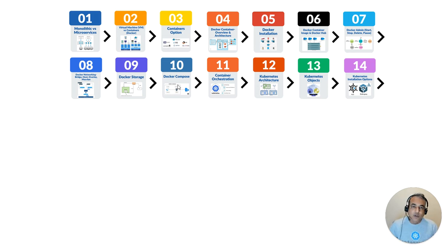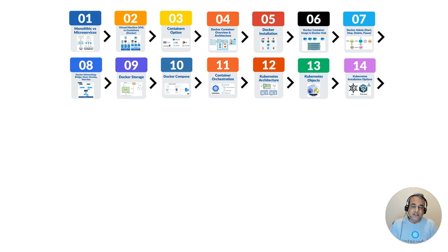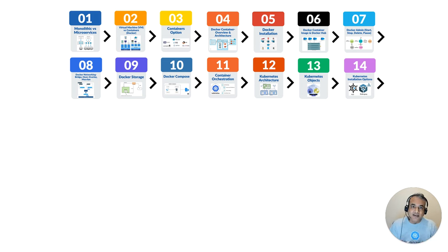Then we'll look at container orchestration tools like Kubernetes, along with alternatives like OpenShift, Amazon ECS, and others. We'll understand what container orchestration means and how to implement it. We'll also look at Kubernetes architecture — the master node and worker node — and various Kubernetes objects like pods and replication controllers, explaining each one in detail.